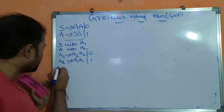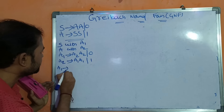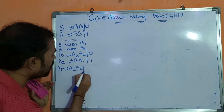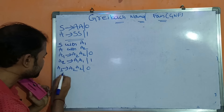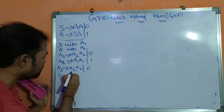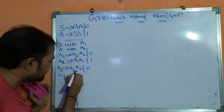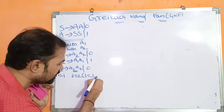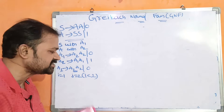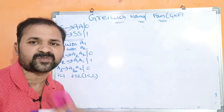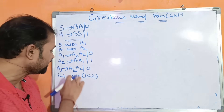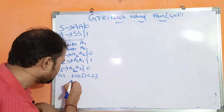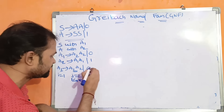Let us consider the first production: A1 implies A2 A2 | 0. Here I equals 1 and J equals 2. Since 1 is less than 2, I is less than J, so we leave this production as it is and substitute later after calculating A2's value.